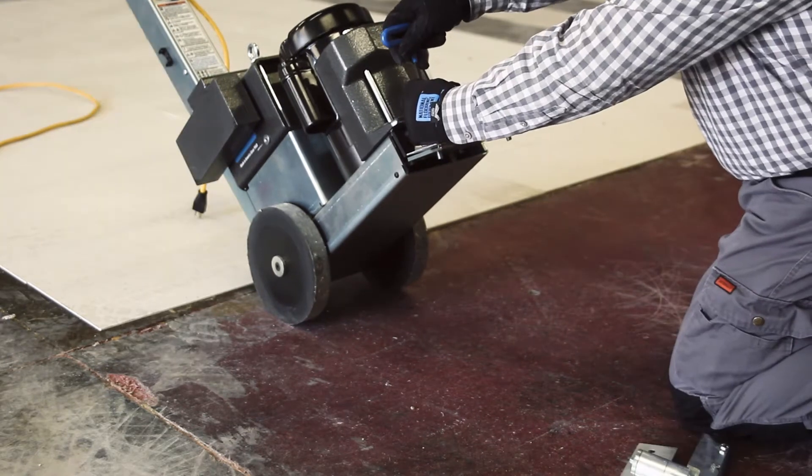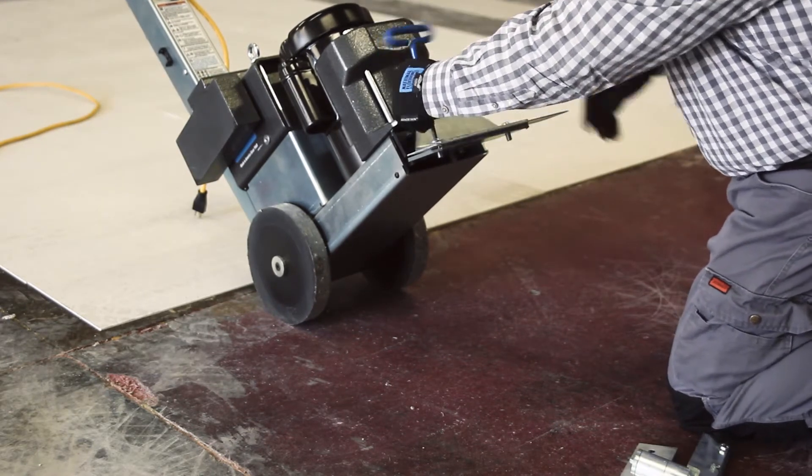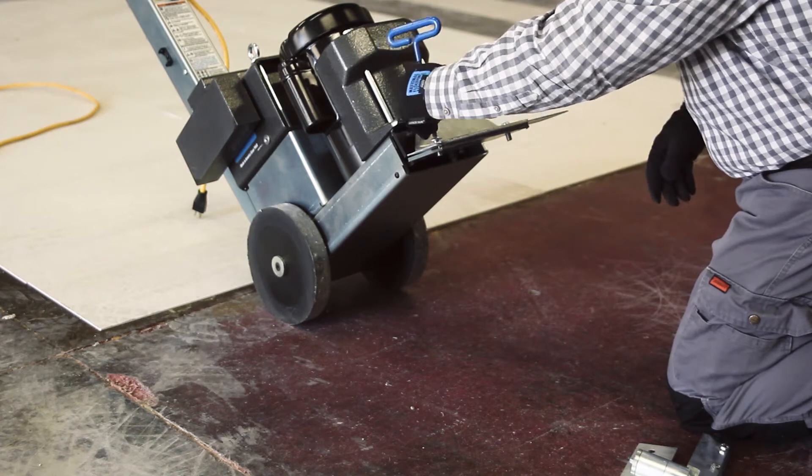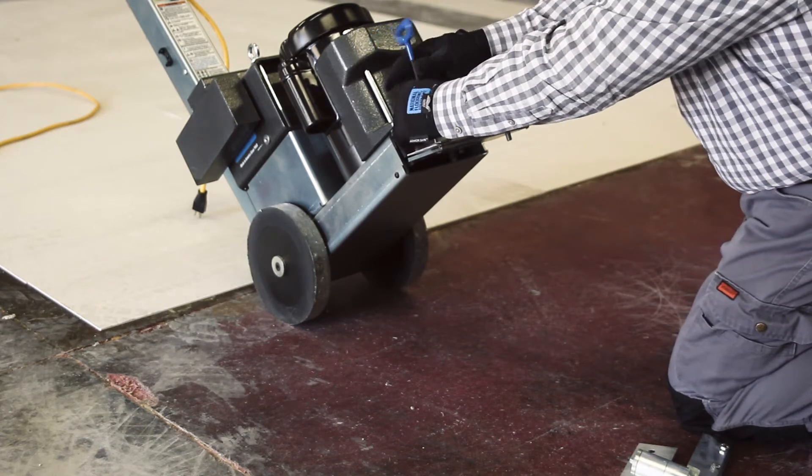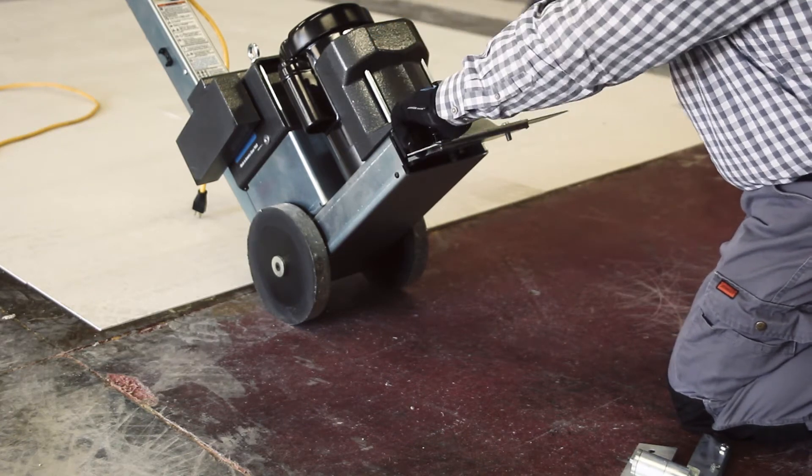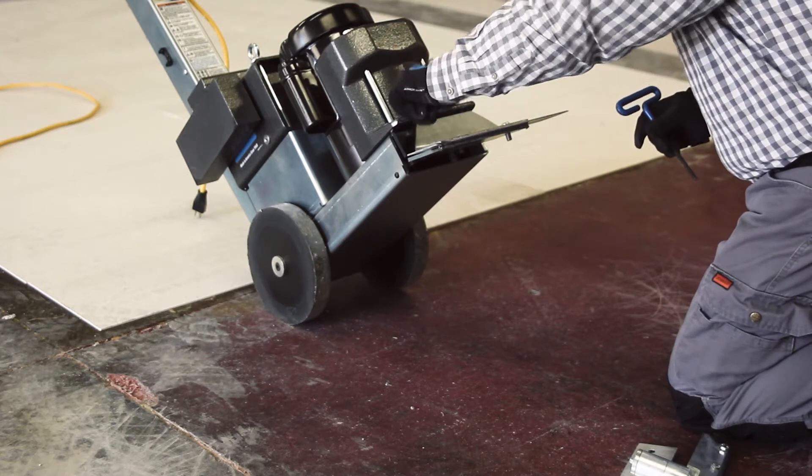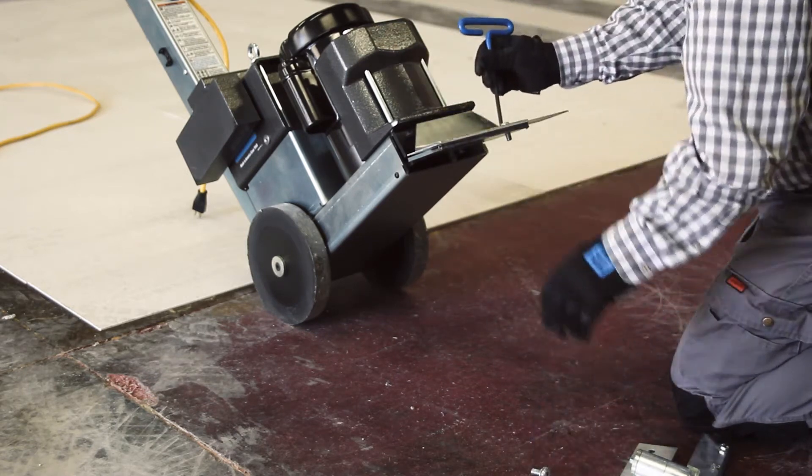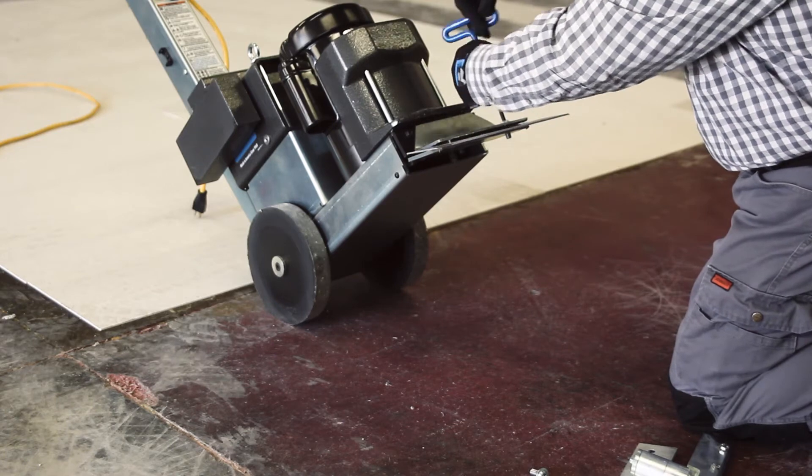The swivel head attachment, part number 6280-500 or 6280-505 depending on which blade you are using, can be used to maximize production rates by keeping the blade 100% in contact with the floor.